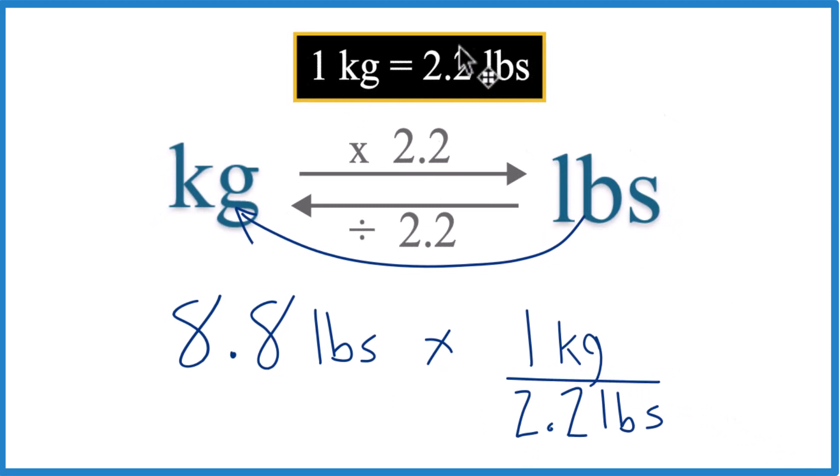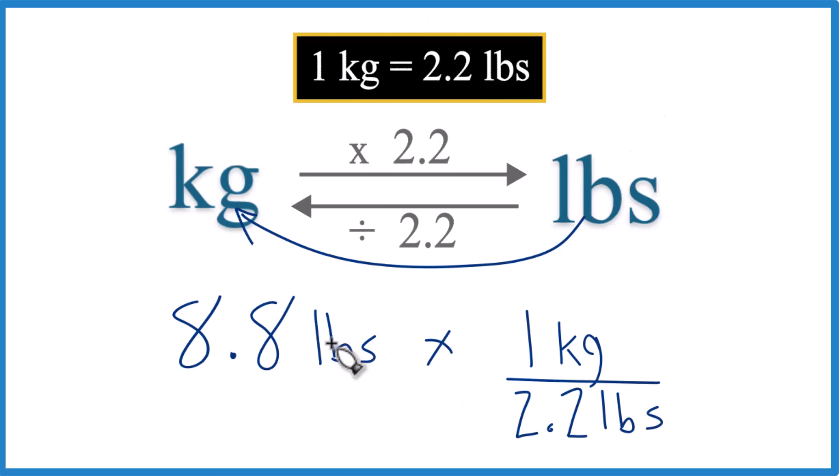So we know there's one kilogram in 2.2 pounds. So we're going to have pounds here. And then we need it on the bottom. This is our conversion factor. When we multiply, it cancels out.